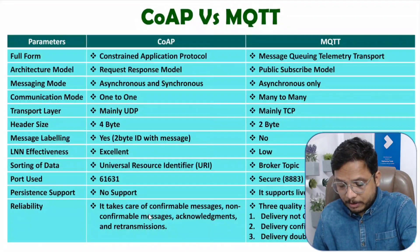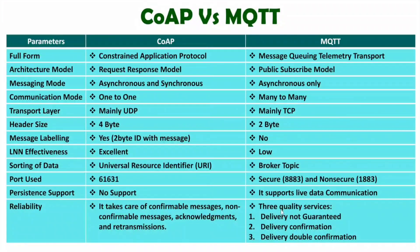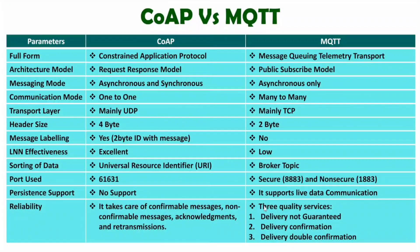When it comes to MQTT protocol, there are three different service levels. One is delivery not guaranteed. Second is delivery confirmation, in which responses are provided. Third is delivery double confirmation, where double confirmation of data transmission is taken. So in terms of reliability, more services are available with MQTT compared to CoAP.